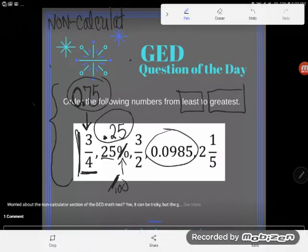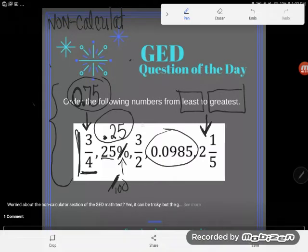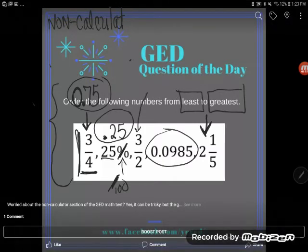The other two numbers here I know are greater than one. This one's obviously greater than one because it's two and something, huh? Two and a fifth. But this one I also know is greater than one. Well, how do I know that?